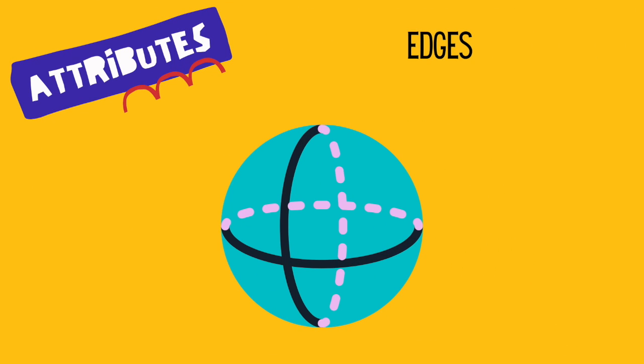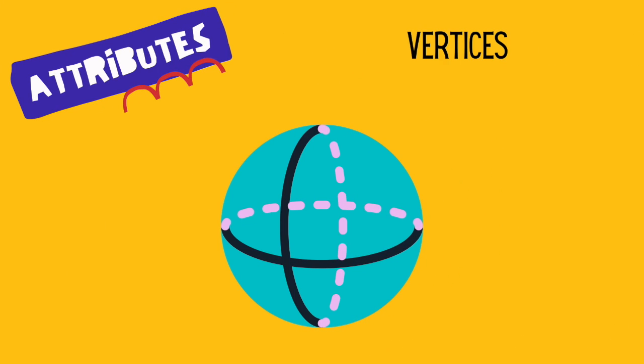Now let's talk about the edges. An edge is where two faces meet. Since there are no faces, there are also no edges. Finally, let's talk about vertices. Vertices are corners — that's where the edges meet. Since there are no faces and no edges, there are also no vertices.